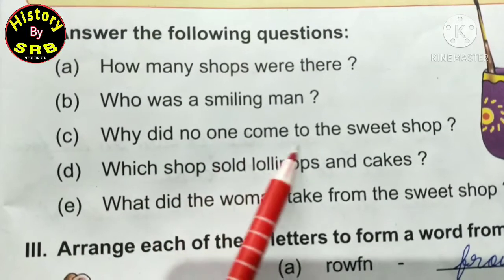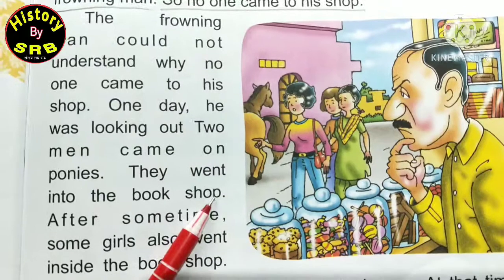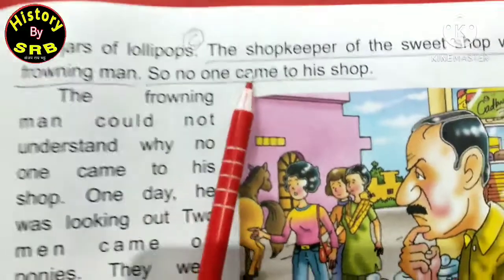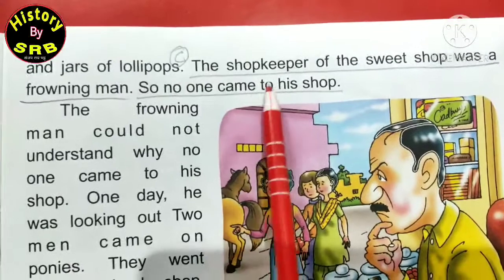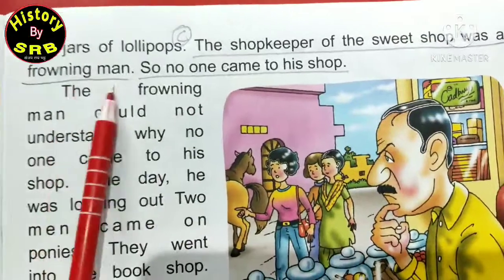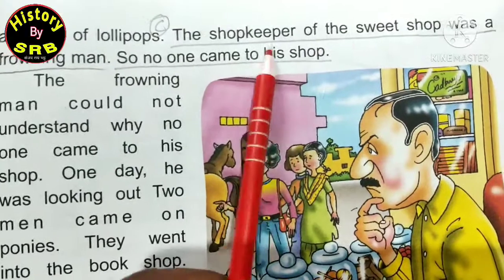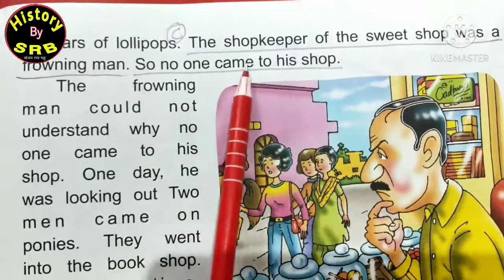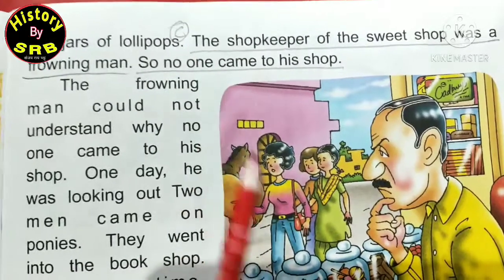Next question C: 'Why did no one come to the sweet shop?' - yaani sweet shop mein koi kyun nahi aata tha? Iska answer page number 87 mein milega. Answer yahan underline kar diya hai: 'The shopkeeper of the sweet shop was a frowning man, so no one came to his shop.' Chunki shopkeeper ka face frowning tha - darahua, gusse wala chehra tha, isliye uski dukan par koi nahi aata tha.